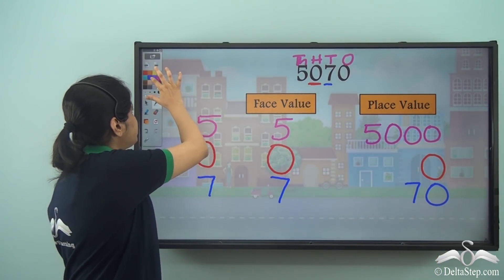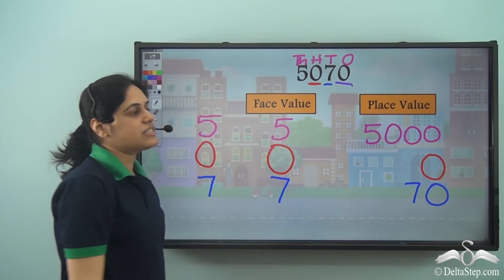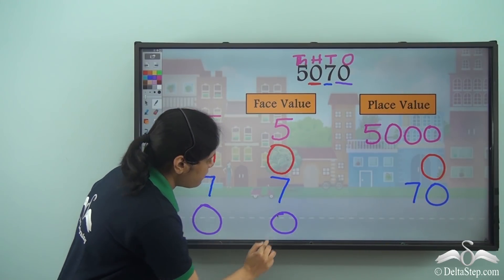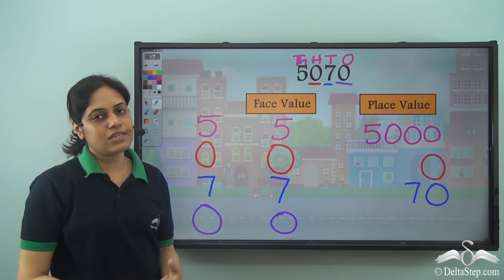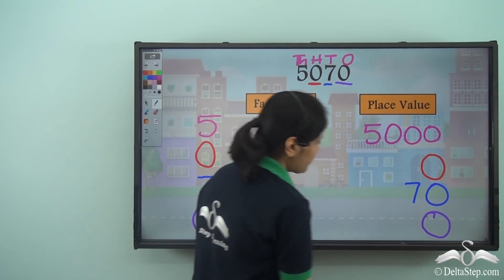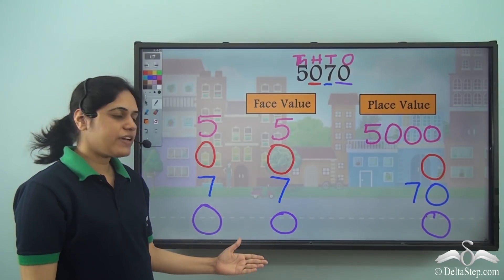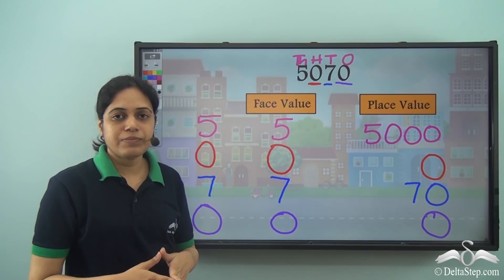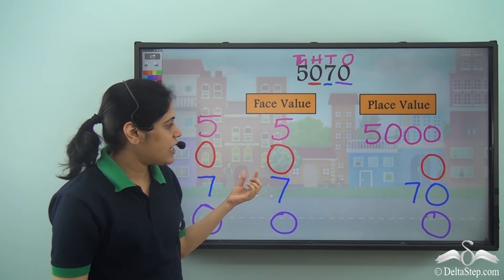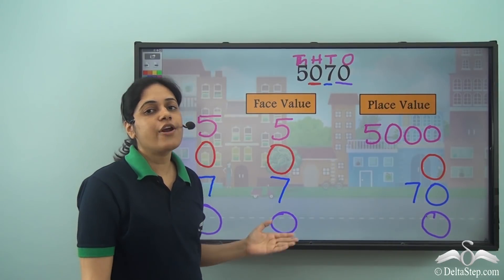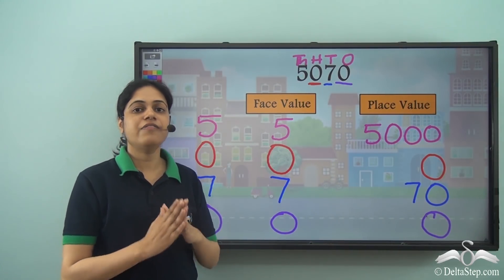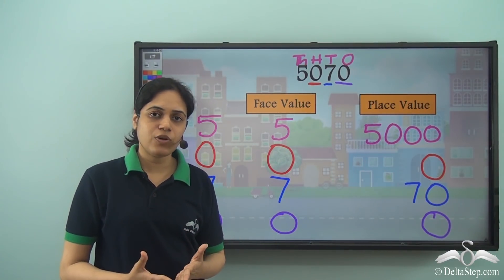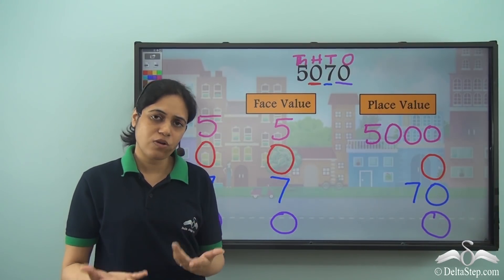Next I have 0 as the ones digit once again. So 0 is the face value of 0. 0 ones is 0. Now observe something: the face value and the place value of 0 are always 0. It doesn't matter where 0 is placed in the number — its place value will always be 0, because 0 of something is always 0.